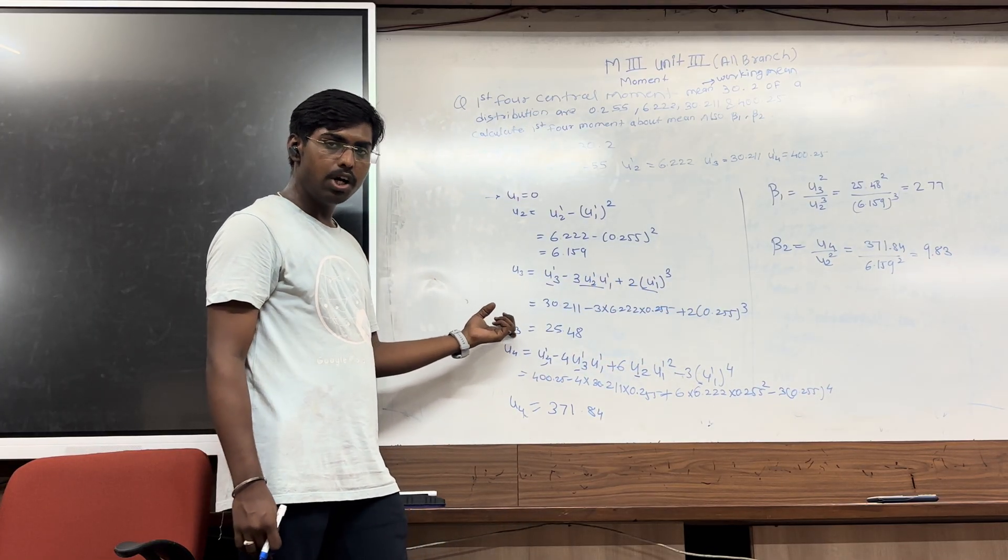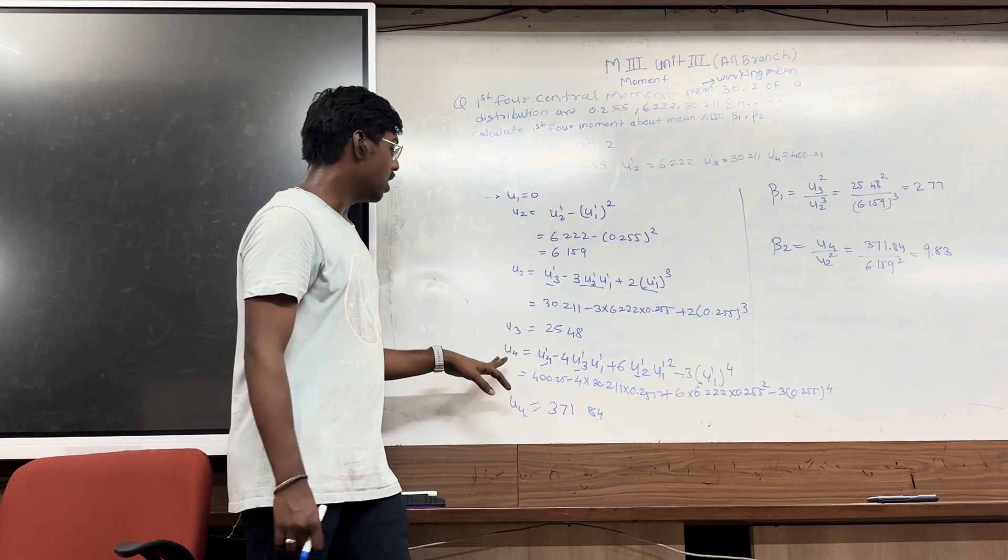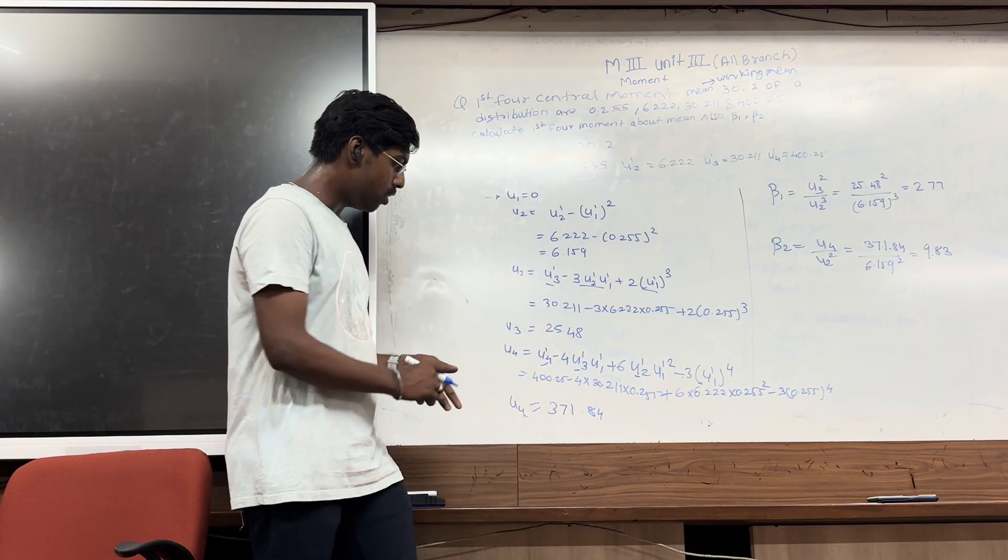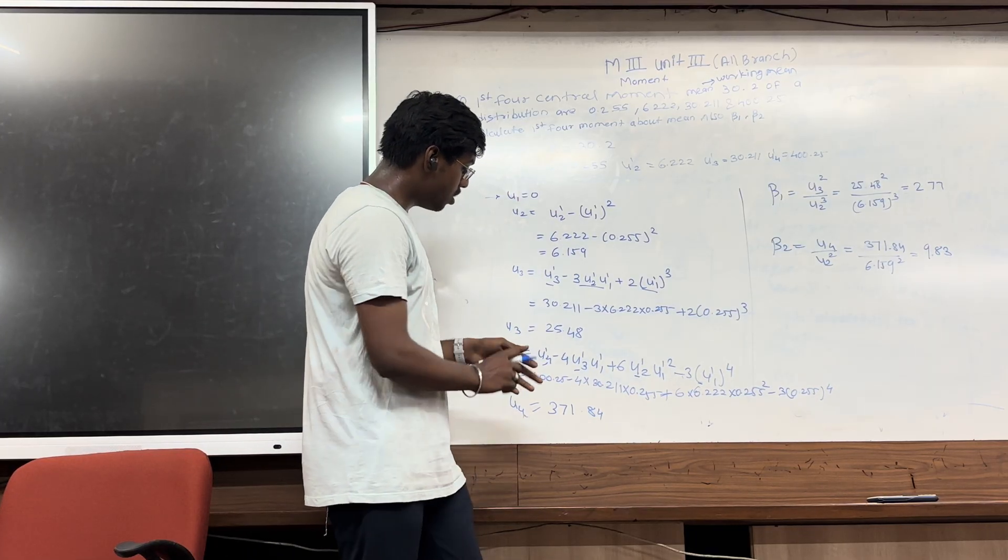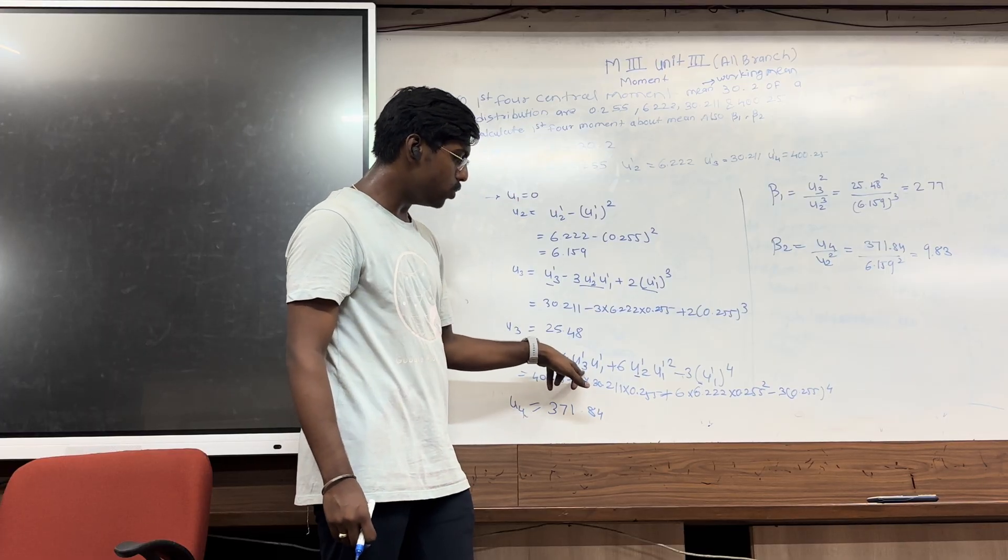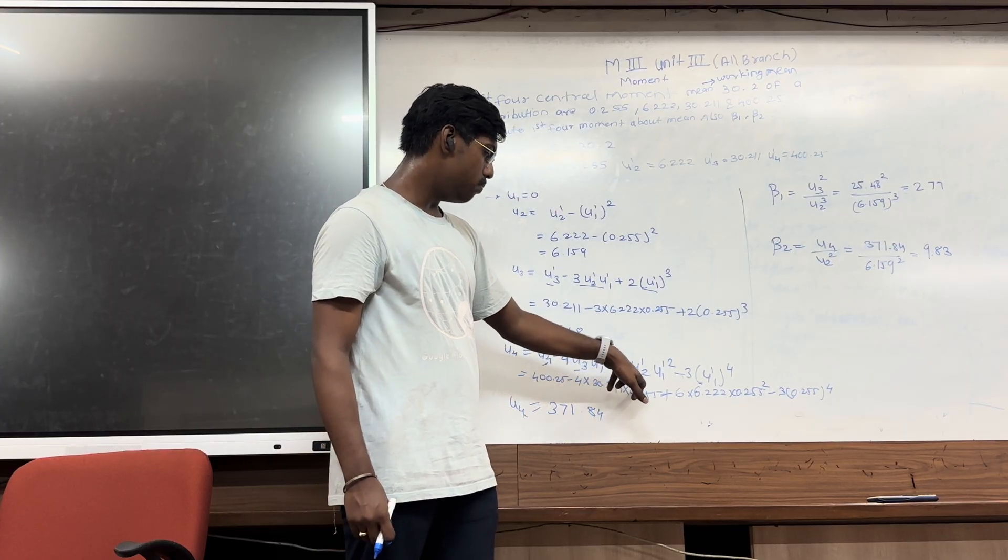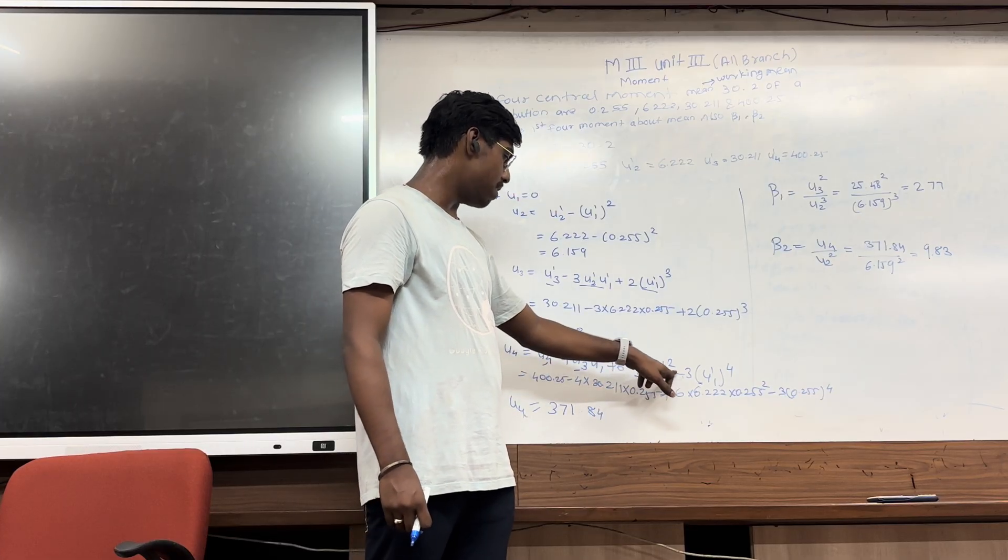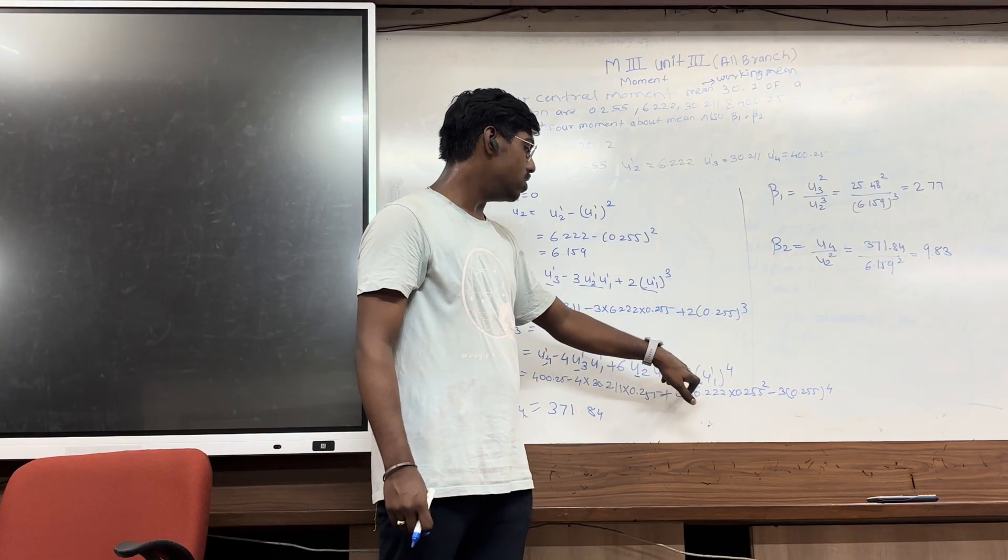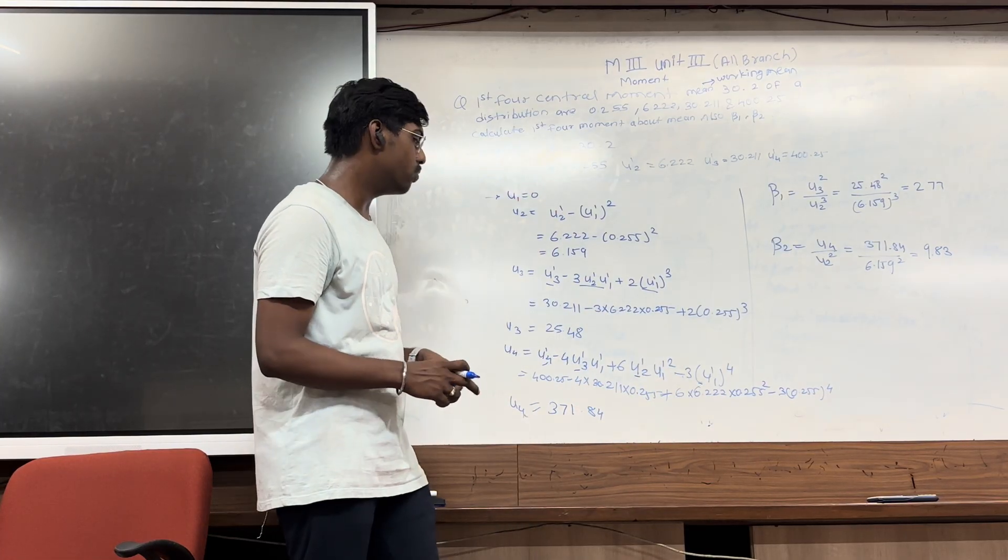After that calculate mu4. Mu4 is mu4 dash minus 4 into mu3 dash into mu1 dash plus 6 into mu2 dash into mu1 dash bracket square minus 3 into mu1 dash to the power 4.